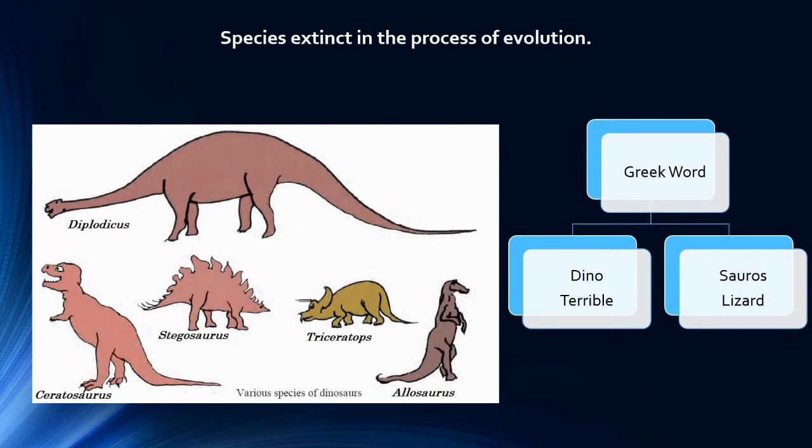Do you know children, in Greek, dino means terrible or dangerous and saurus means lizard or reptile. So it was said, dinosaur means terrible lizard because they were enormous, big in size. But now we can't see all these various species of dinosaurs because they all became extinct due to changes in environment.